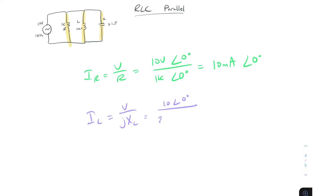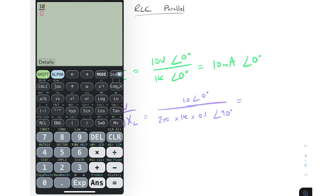For the inductor current, we divide by 2π times 1k times 0.1, and that's at an angle of 90 degrees because the inductor is phase shifted 90 degrees. Using a calculator: 10 divided by 2π times 1000 times 0.1 gives us 15.9 milliamps.